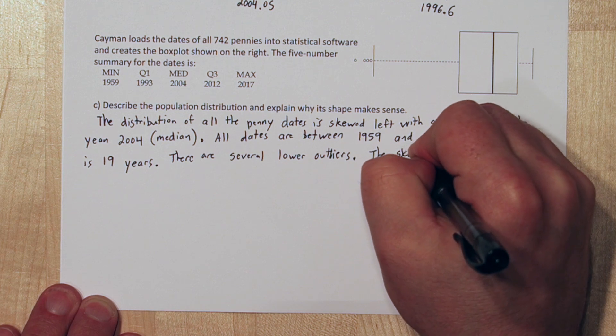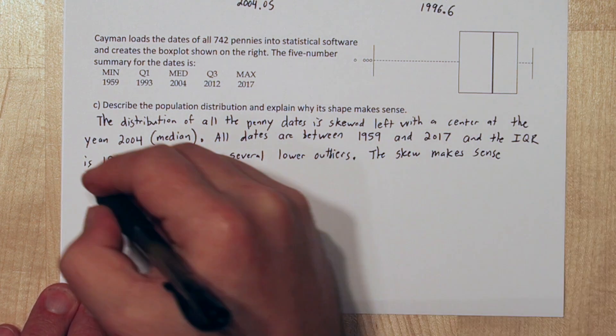There are several lower outliers, and we know one of them is 1959 because that's the minimum.